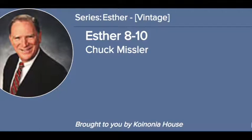So here we are in Esther chapter 8. Mordecai's been put in the power of Haman — Haman is a done deal — but they've still got a problem. They've got almost a year away that the Jews are scheduled to be wiped out. Chapter 8, verse 1: 'On that day did King Ahasuerus give the house of Haman, the Jews' enemy, unto Esther the queen.' Since he was considered a criminal, his property was forfeit to the crown, and so they give it to Esther.